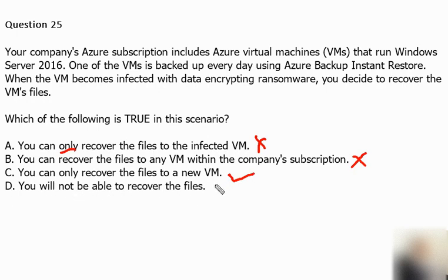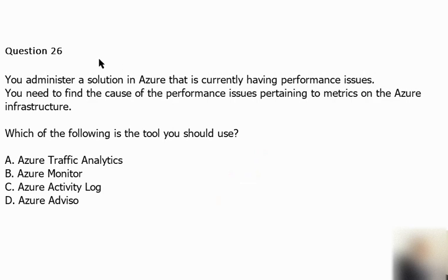Option D — you will not be able to recover any file — is definitely the wrong answer. Moving to question 26: you administer a solution in Azure that is currently having performance issues. You need to find the cause of performance issues pertaining to metrics on the Azure infrastructure.